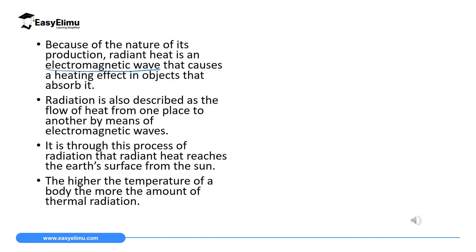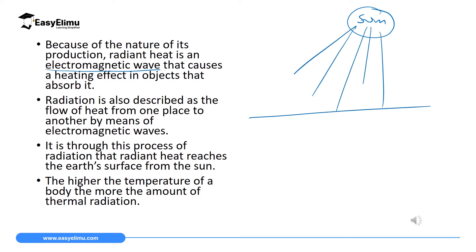Through the nature of electromagnetic waves in radiant heat, we can define radiant heat as the flow of heat from one place to another by means of electromagnetic waves. It is through radiation that we receive the sun's energy into our atmosphere. Between the sun and the atmosphere, we have a vacuum.